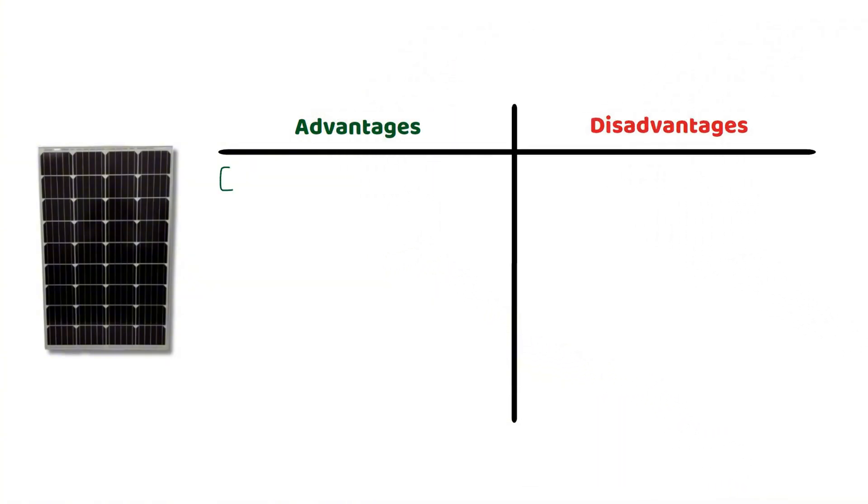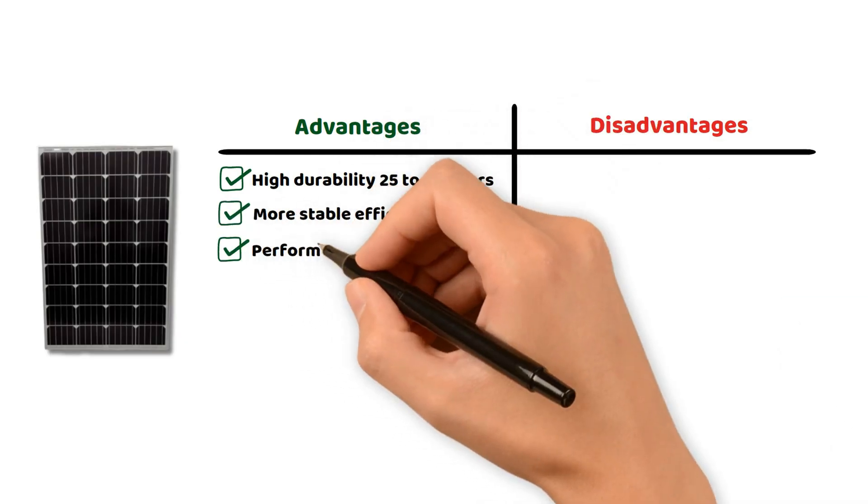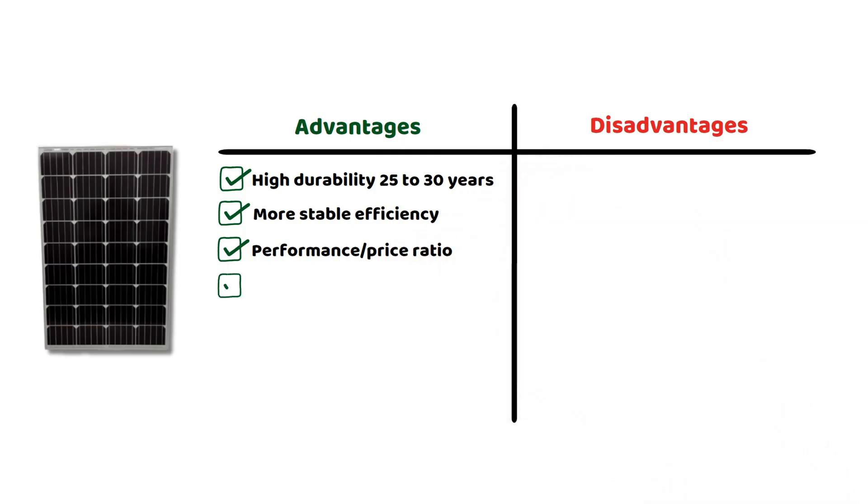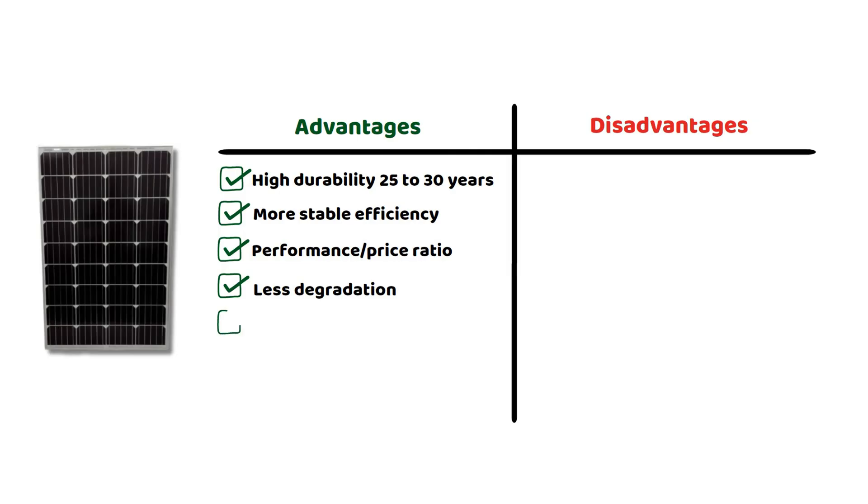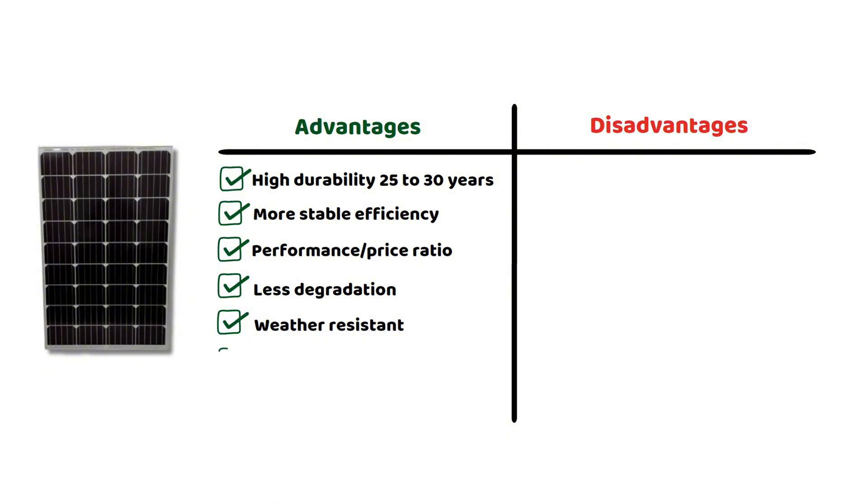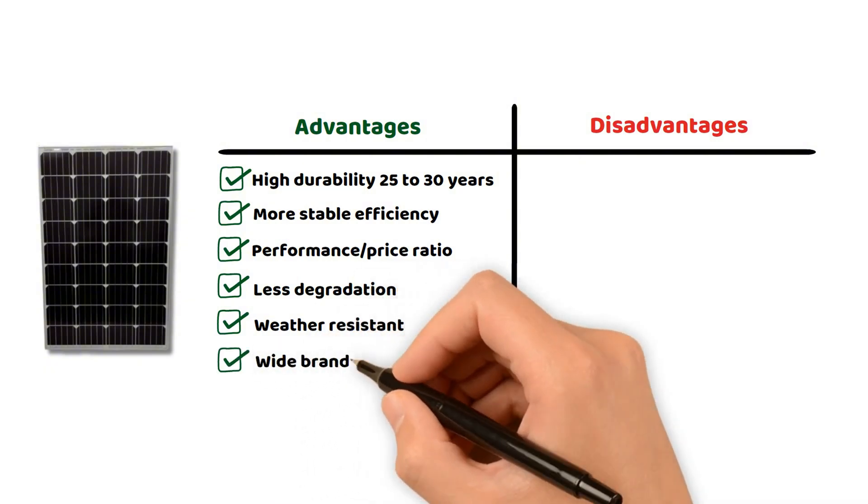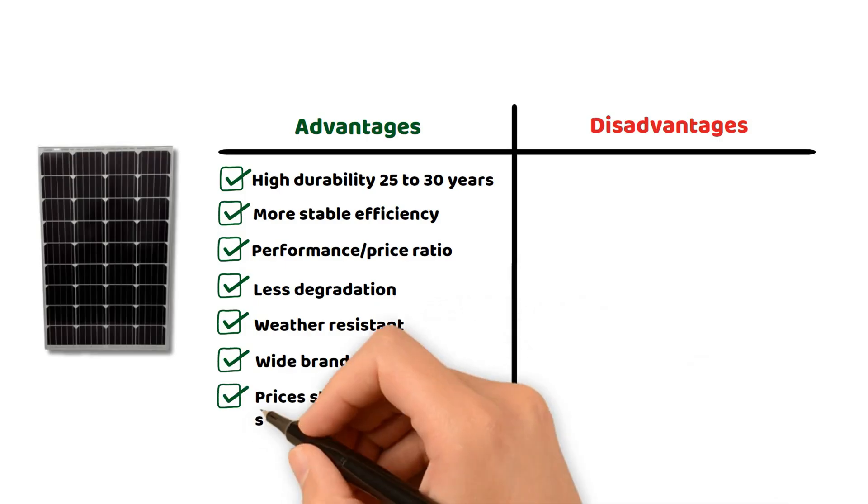For rigid panels, the advantages are also very strong. High durability, up to 25-30 years. More stable efficiency. Less sensitive to heat, thanks to natural ventilation. Better performance-to-price ratio over the long term. Less degradation. No yellowing like the flexible plastic, thanks to tempered glass. Better resistance to weather. UV, hail, and wind, thanks again to very strong glass. Wide choice of brands, power levels, and bifacial technologies. And above all, always lower prices since 2025.